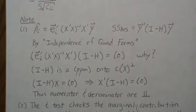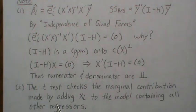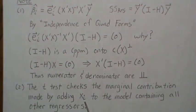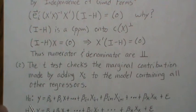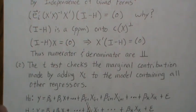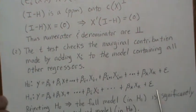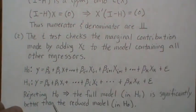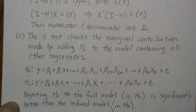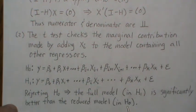Thus the numerator and denominator are independent. Note that the t-test checks for the marginal contribution made by adding x_i, associated with beta_i, to the model containing all other regressors. The null hypothesis is saying is this beta_i zero - notice it goes from beta_(i-1) to beta_(i+1) because it's missing - versus they're all there in the alternative. That's what this test statistic checks. Rejecting the null hypothesis implies that the full model in the alternative is significantly better than the reduced model in the null hypothesis.